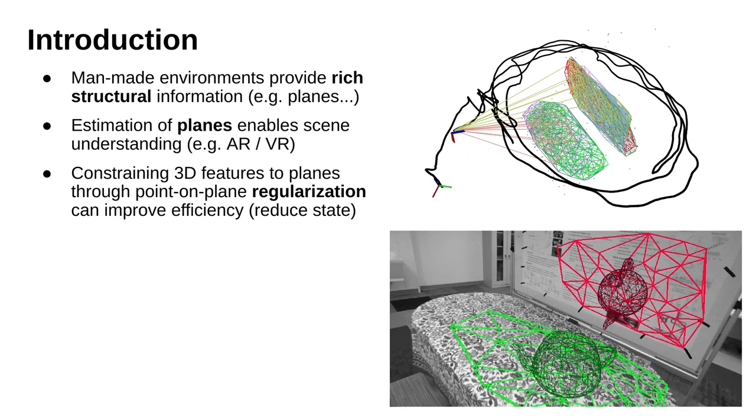Most monocular VIO systems rely on sparse point features to navigate. However, man-made environments provide rich structural information such as planes, which can be observed by a camera for longer periods and can benefit long-term navigation. We believe that estimating planes can enable scene understanding and improve AR-VR applications.